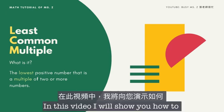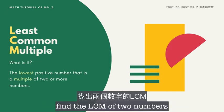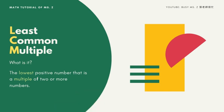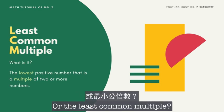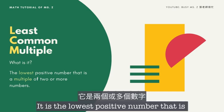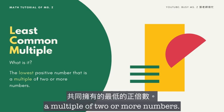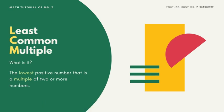Hi everyone! In this video, I will show you how to find the LCM of two numbers. So what is the LCM, or the least common multiple? It is the lowest positive number that is a multiple of two or more numbers.